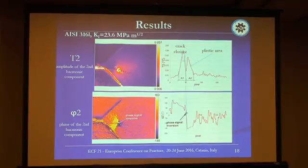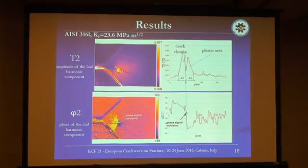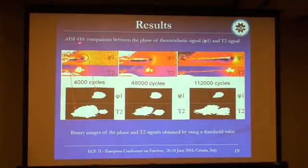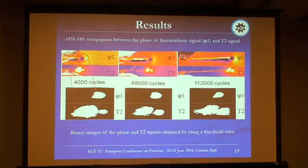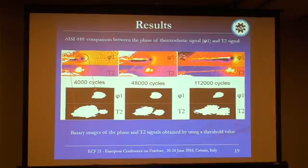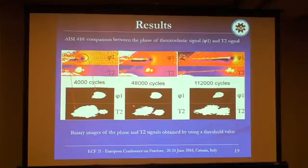We can see the same results for the austenitic stainless steel, and the same considerations are valid for both austenitic and martensitic stainless steel. In this image, it is possible to see the comparison between the phase signal P1, related to the frequency of the loading machine, and the two signals of the second harmonic component of the Fourier series. With binarization of the image using the same threshold value, it is possible to highlight that, with increasing cycles, the plastic area seems to grow. Analyzing the T2 component, this behaviour differs from that of the P1 component.